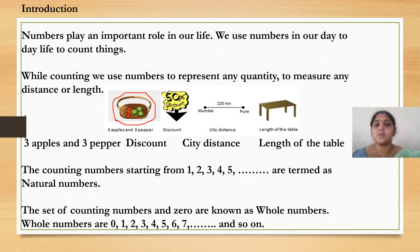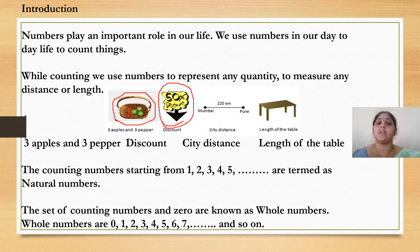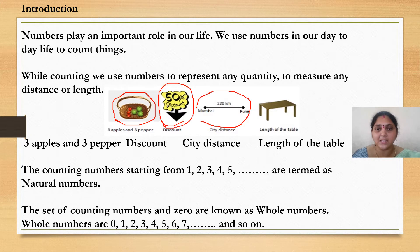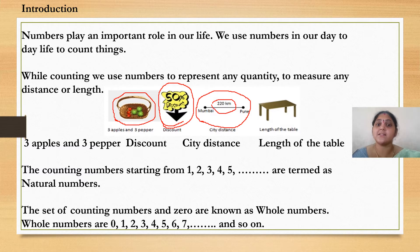If you are going to see the discount mark on the picture, how you are going to tell it is 50% discount — whenever you are taking any product to our home, we will be checking the discount. Next, if you observe, it is the distance between 2 places. When you are seeing the distance between 2 places, you will be finding the length of the distance. Here the distance between 2 cities is 220 kilometres. It is the largest distance.